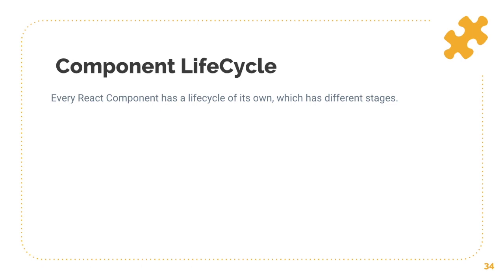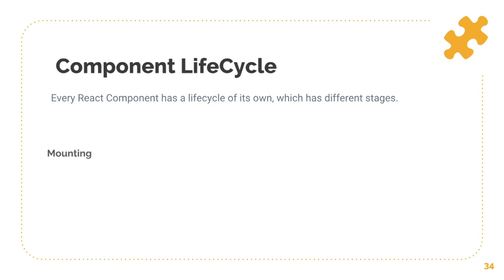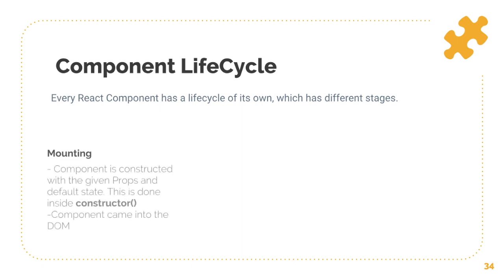I would divide them into three different stages. One is mounting, then you have updating, then you have unmounting. In the mounting stage, the component comes inside of the DOM. The component is constructed with the given props and default state, which is done in the constructor method, which we have discussed in the previous videos.